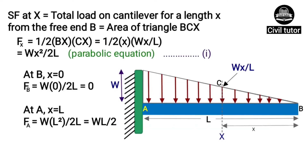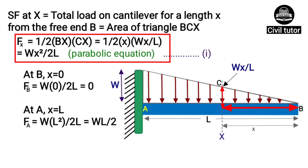The shear force at section x would be equal to the total load on the cantilever for a length x from the free end B, which is equal to the area of triangle BCx. So shear force at section x equals (1/2) × x × (Wx/L) = Wx²/2L, forming a parabolic equation.